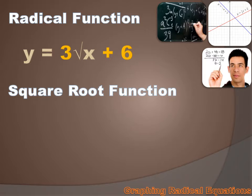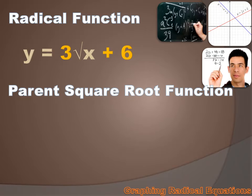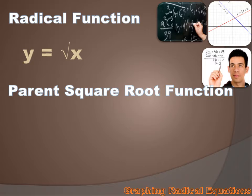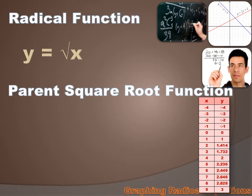It would still be a radical function, but it would also be a square root function. And I could get rid of that 3 and that plus 6 and make this the parent square root function: y equals the square root of x. This is kind of an important function because all the other radical functions are variations of this. So let's graph this function.